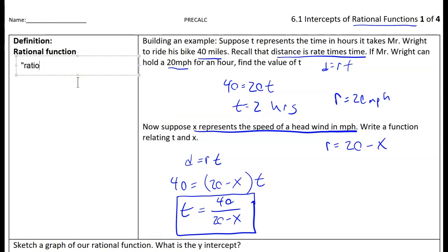The word rational comes from the word ratio, which means a fraction. So it's called a rational function because it's a function made of fractions.